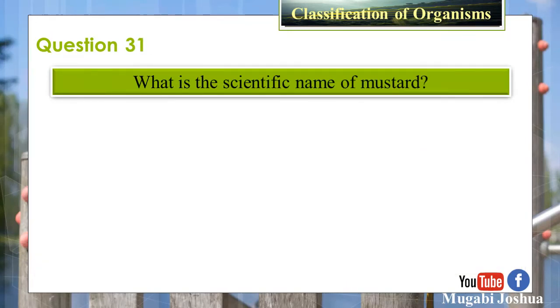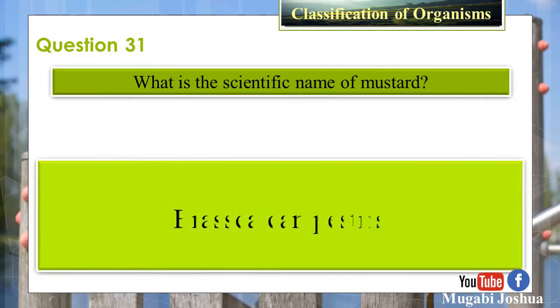Question 31: What is the scientific name of mustard? Answer: Brassica campestris.